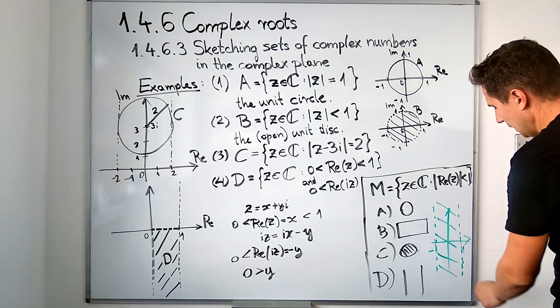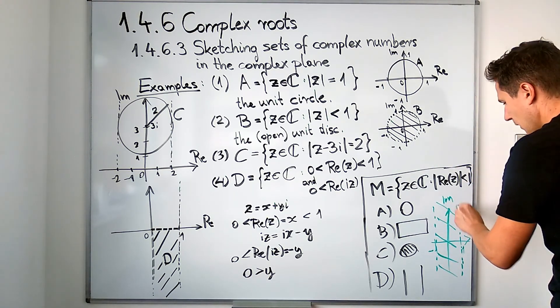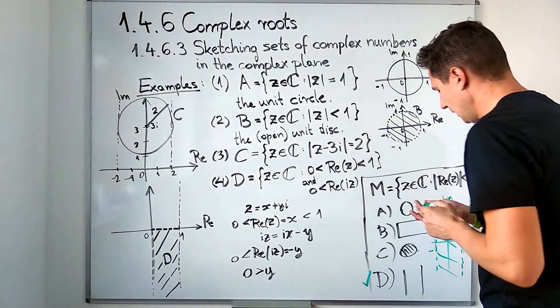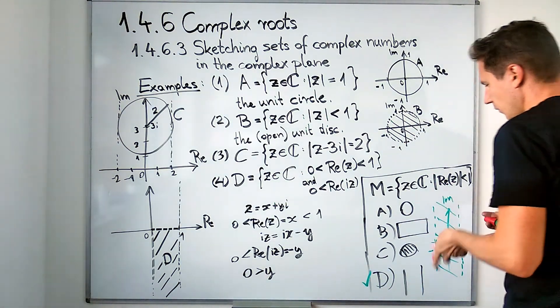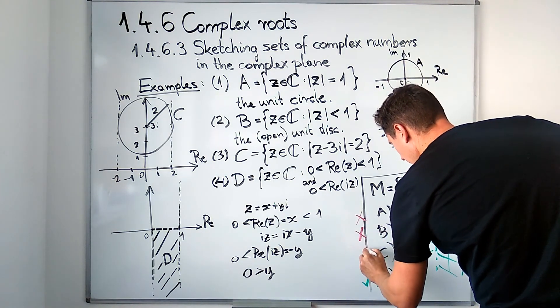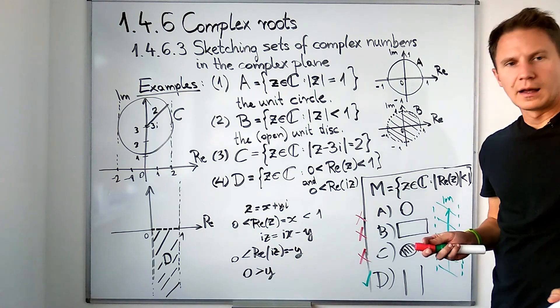So this set is definitely going to be this infinite strip between these vertical lines at negative one and one, being parallel to the imaginary axis. It is option D that's correct. So it's not a circle, nor is it a rectangle or a disk. I'll see you in the next one.